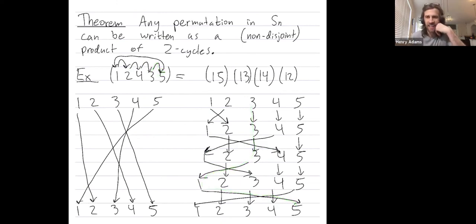We didn't really orchestrate things so that 5 would get mapped to 1, but that ends up happening via this process as well. This shows how to take a 5-cycle and write it as a product of transpositions.